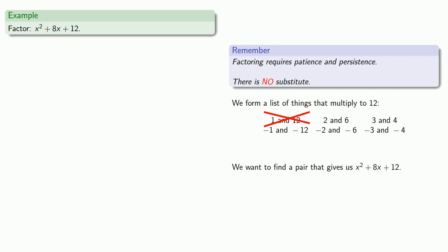So, 1 and 12 don't work. There's a whole bunch of things that might work. So let's try 2 and 6 and check. Is x squared plus 8x plus 12 the same as x plus 2 times x plus 6? And we expand and find that it is. And so that gives us our factorization.